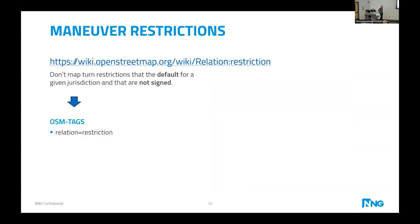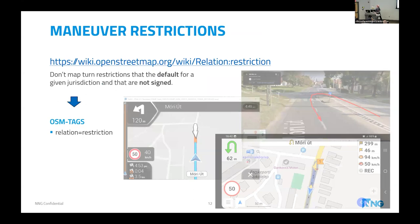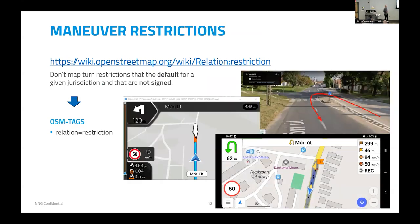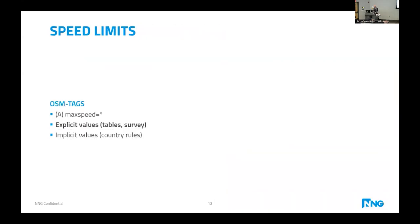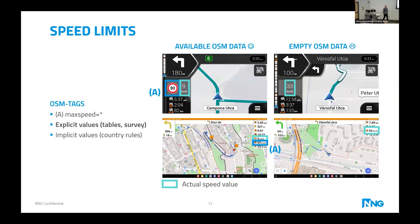For maneuver restrictions, it could be good to start a discussion on the current mapping guideline. The guideline says that if something is not signed by a table sign it shouldn't be mapped, but here's an example: at a certain junction, a U-turn is not prohibited by signage, yet both navigation solutions could plan this dangerous route. Our experience with other maps shows that if a maneuver restriction is logically needed, even without a sign, it's better to include it — something that might be reconsidered in the mapping guideline.